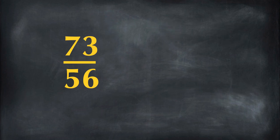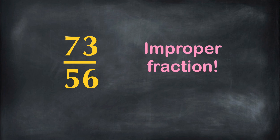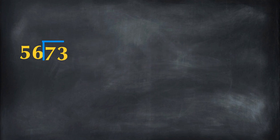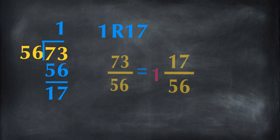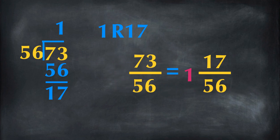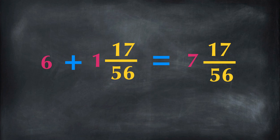73 over 56 is an improper fraction, so we are going to change it into a mixed number. 56 goes into 73 one time. 56 times 1 is 56. 73 minus 56 is 17. 17 is a remainder. So 73 over 56 equals 1 and 17 over 56. We need to add the whole numbers together: 6 plus 1 equals 7. The final answer is 7 and 17 over 56.